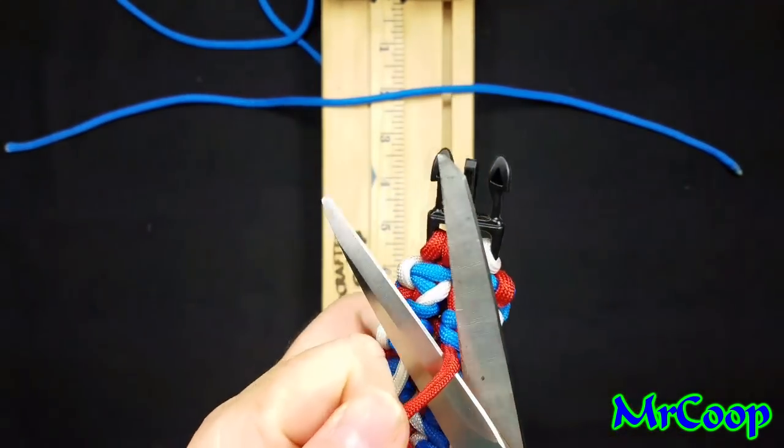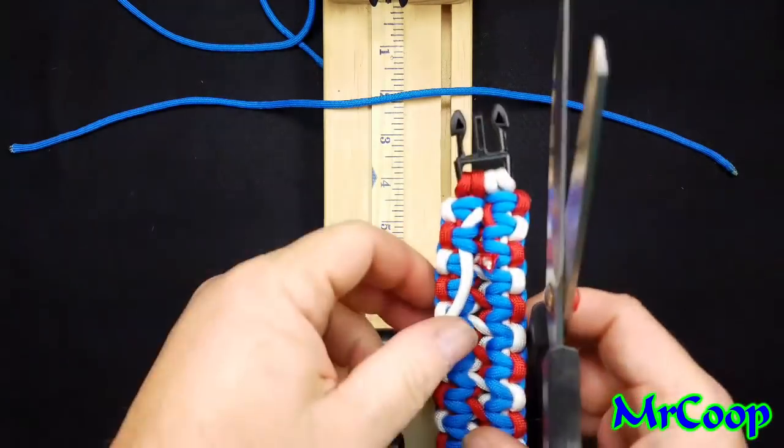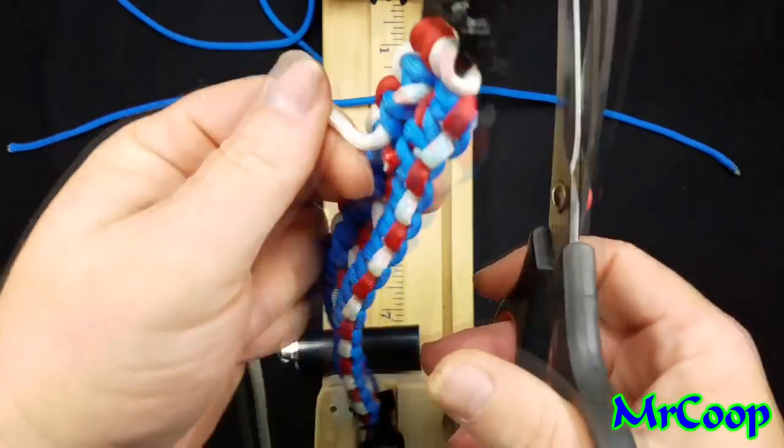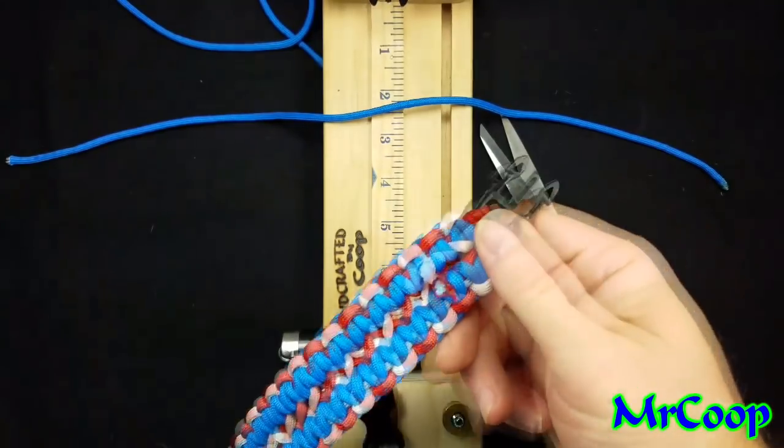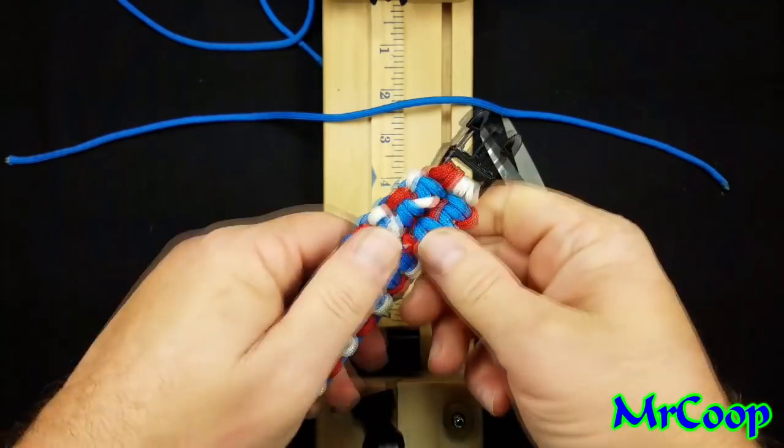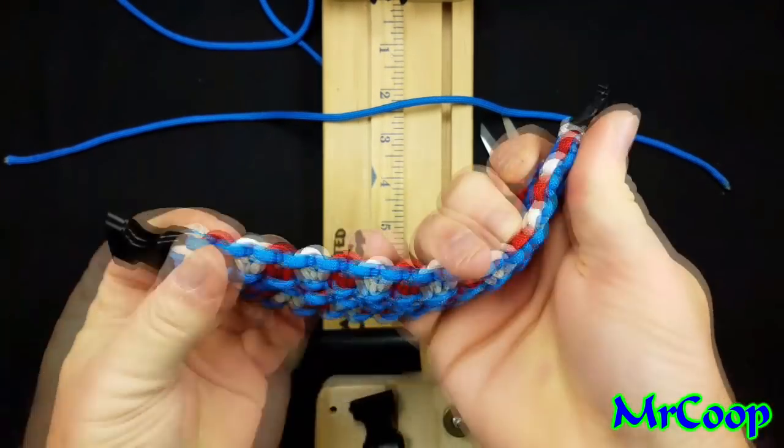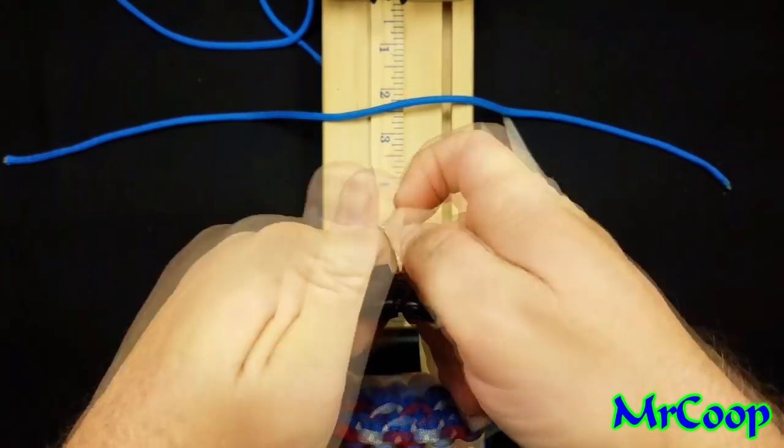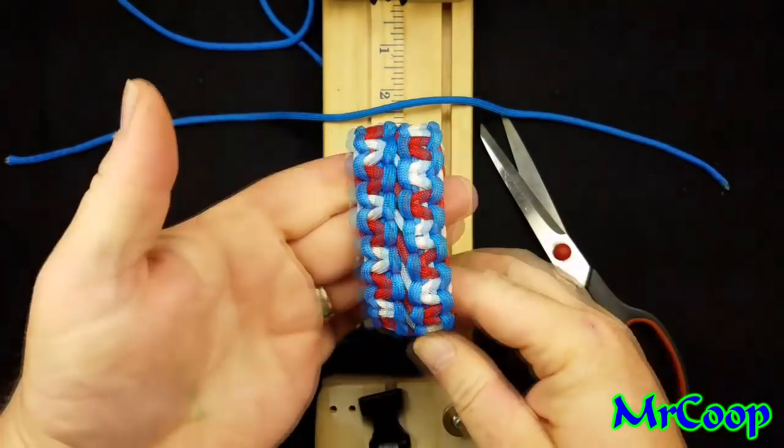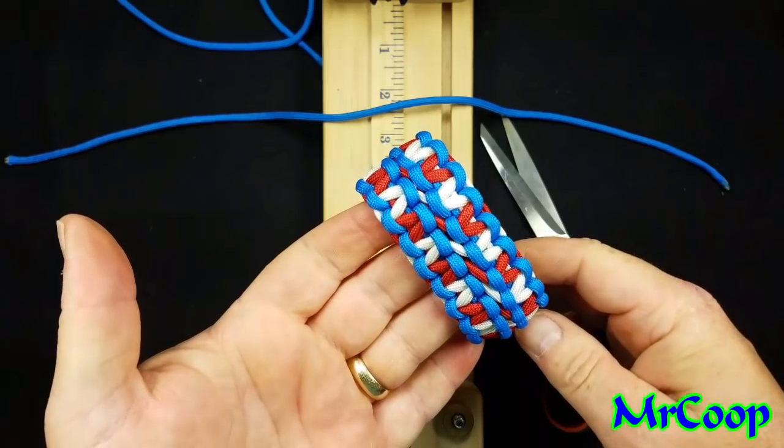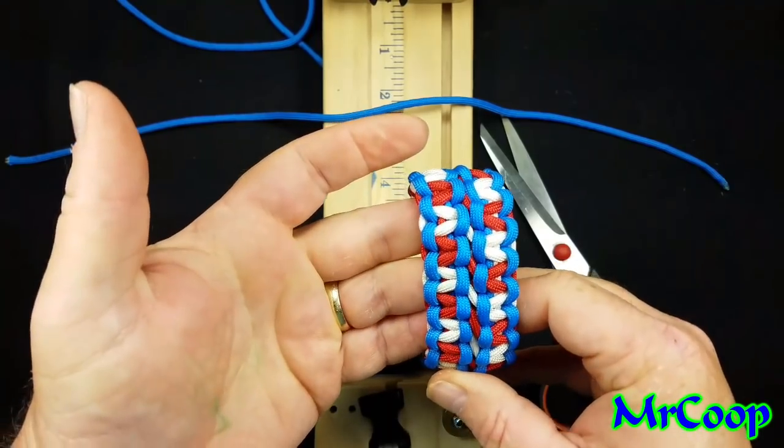So, once we've got that done, we're just going to cut them as close as we can. And just let that fray. It's not going to come out. It's going to stay in there. It's already locked up here. So, everything will be fine. And there you go. You have one double-wide Solomon bar bracelet in the American flag colors.